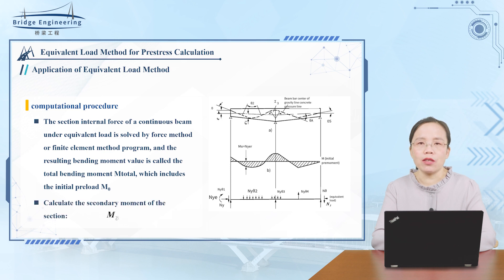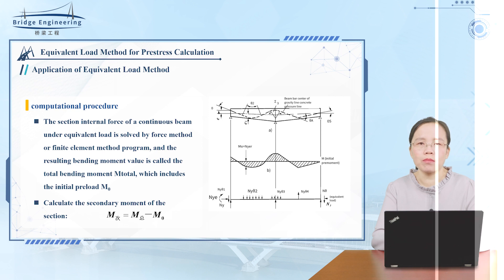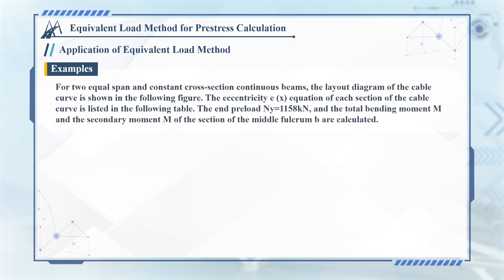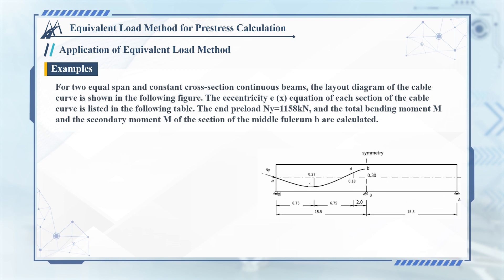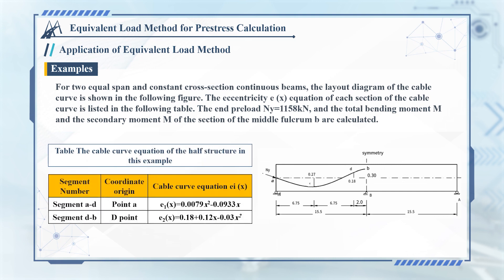Calculate the secondary moment m2 of the section; the calculation formula is as follows. For two equal-span continuous beams with constant cross-section, the layout diagram of the cable curve is shown in the figure, and the eccentricity equation of each section of the cable curve is listed in the following table.